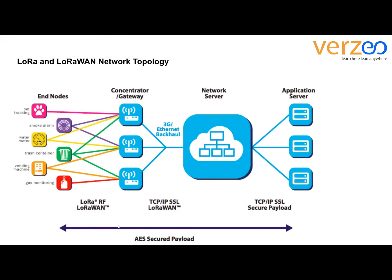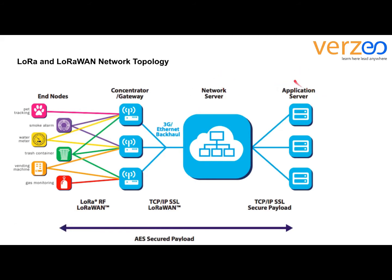LoRaWAN network architecture is deployed in a star-of-stars topology — not bus or mesh. Base stations relay data between sensor nodes and network servers. The network server receives data from end nodes and sends it to the application server, and the application server sends data back to end nodes through the network server.